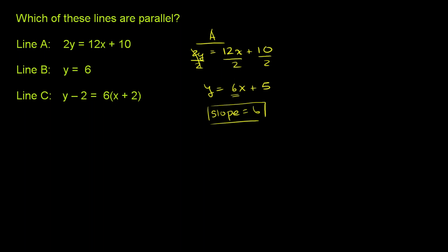Let's try line B. Line B is y is equal to 6. Now you might say, hey, this is a bizarre character. How do I get this into slope-intercept form? Where is the x? And my answer to you is that it already is in slope-intercept form. I could just rewrite it as y is equal to 0x plus 6.